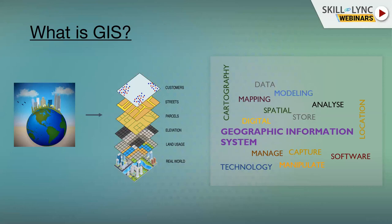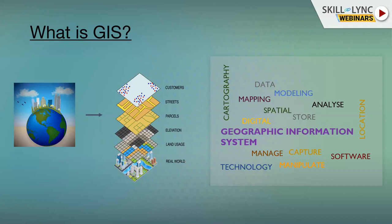We are basically harnessing technology to find a solution, because it's not easy to analyze thousands of data cells manually. You are ultimately dependent on technology, so there has to be software on which you do the whole mapping, analysis, and output generation. In GIS, location is key — you are virtually building the whole world within the GIS environment, bringing real data onto a virtual world.